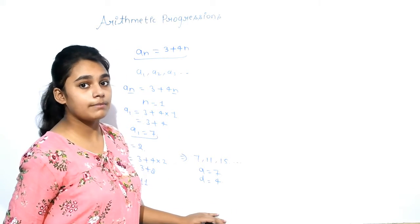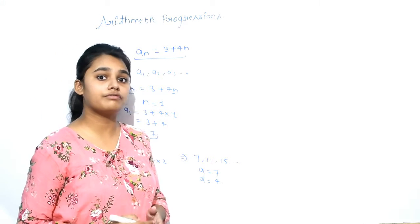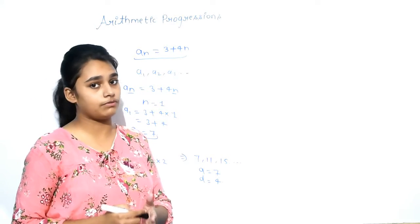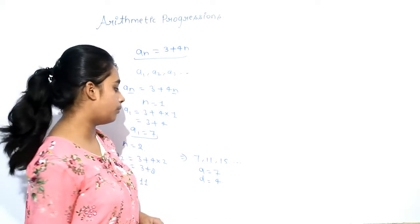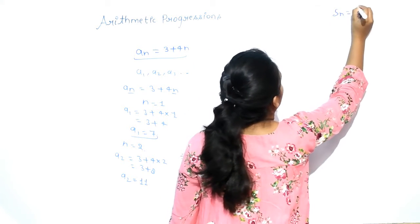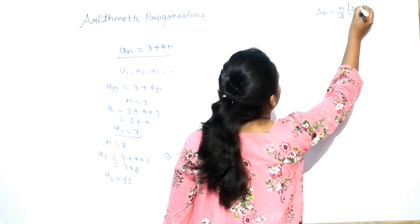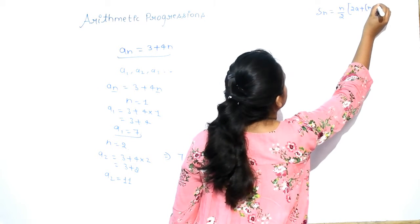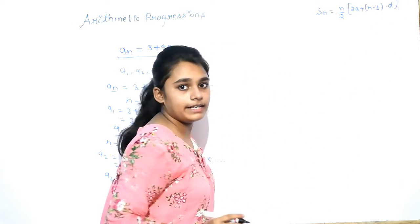Now, in the same question, the question will ask you to find the sum of first 15 terms. Means first N terms of the AP. In this question, I am taking the sum of first 15 terms. The formula is SN equals N upon 2, 2A plus N minus 1 into D. It is our formula for finding the sum.